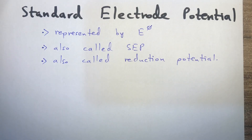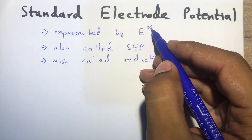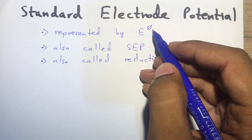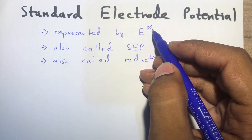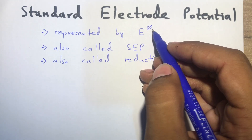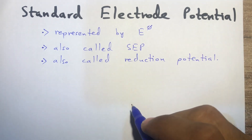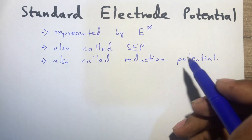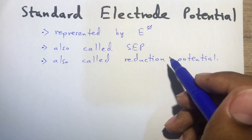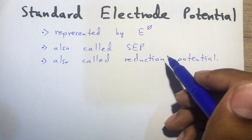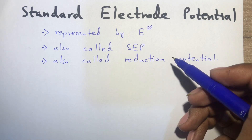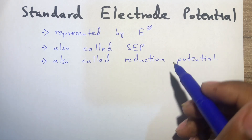The standard electrode potential is represented by E° (or E-phi). The phi symbol represents standard conditions: 1 atm pressure, 298 K, and 1 mole per dm³ in solution. It is also called SCP as a short form, and it is also called reduction potential. Now, how do we calculate the value of SCP?